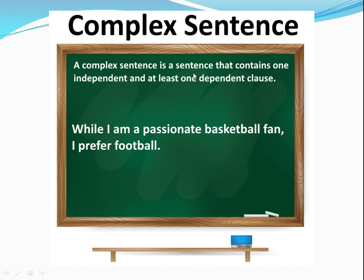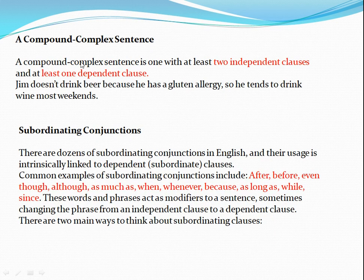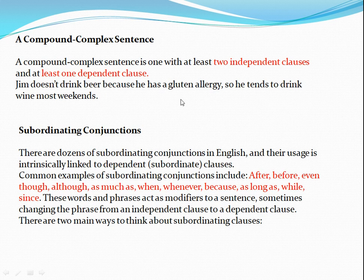A complex sentence contains one independent and at least one dependent clause. For example: 'While I am a passionate basketball fan, I prefer football.' A compound-complex sentence is one with at least two independent clauses and at least one dependent clause. For example: 'Jim does not drink beer because he has a gluten allergy, so he tends to drink wine most weekends.'